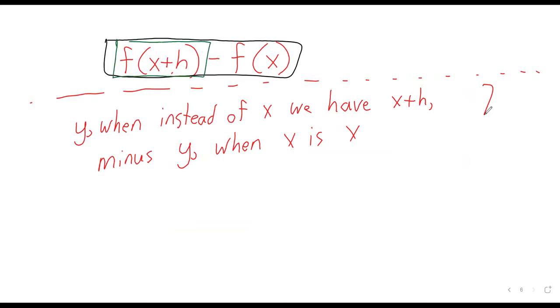Say f of x is, I don't know, something, a quadratic. So x is the input, what you have on the right is the output.